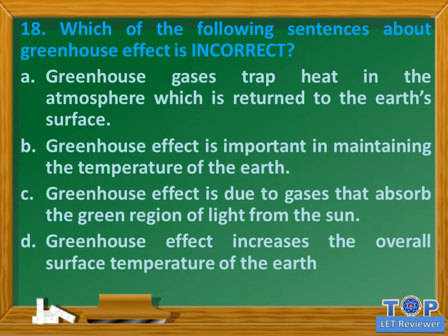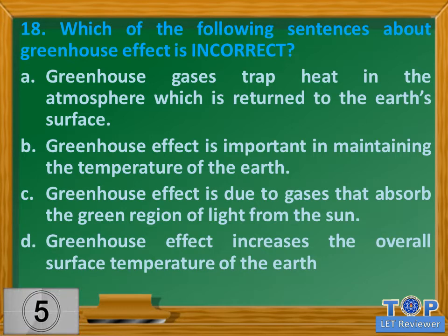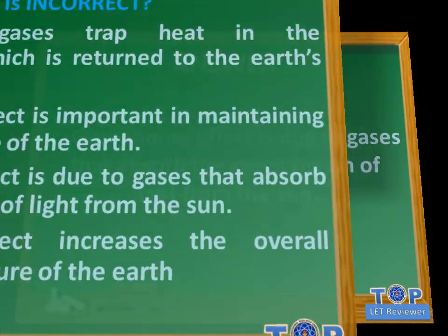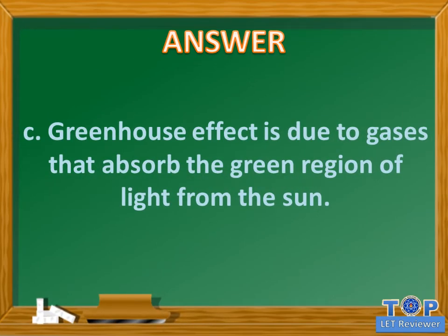Question number 18. Which of the following sentences about the greenhouse effect is incorrect? A. Greenhouse gases trap heat in the atmosphere which is returned to the earth's surface. B. Greenhouse effect is important in maintaining the temperature of the earth. C. Greenhouse effect is due to gases that absorb the green region of light from the sun. D. Greenhouse effect increases the overall surface temperature of the earth. Answer: C. Greenhouse effect is due to gases that absorb the green region of light from the sun.